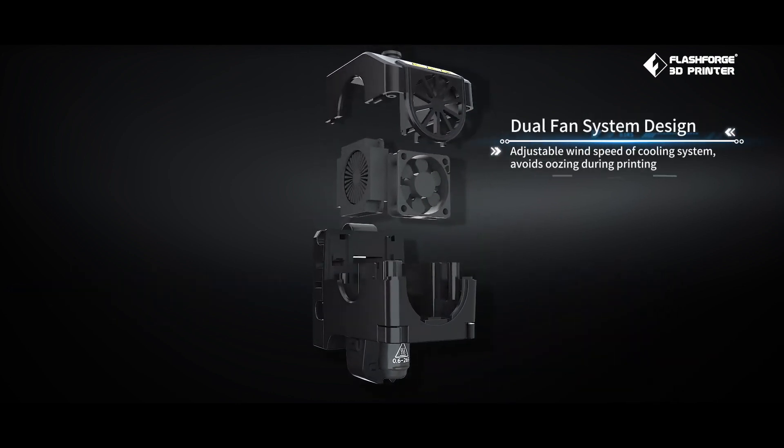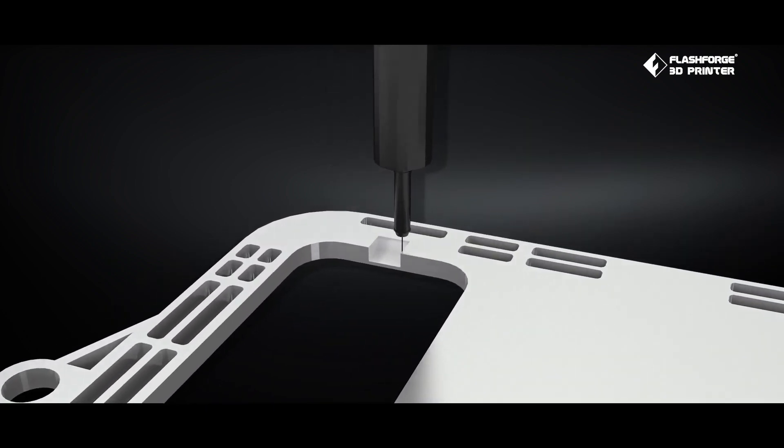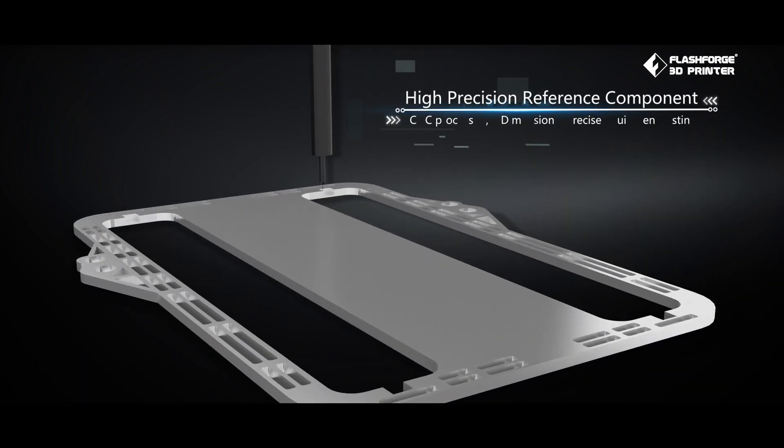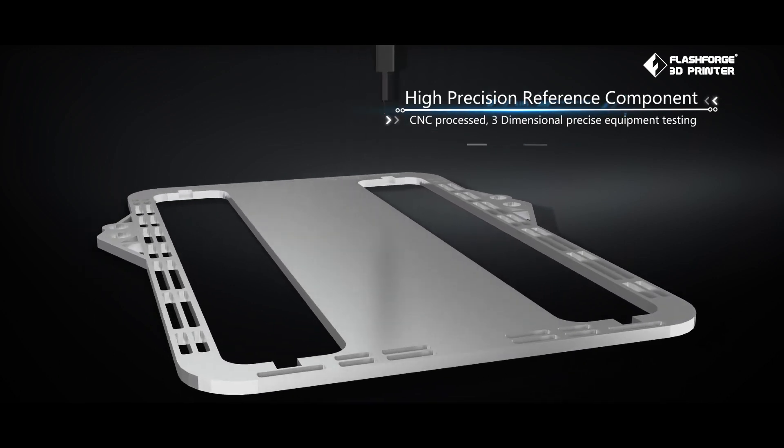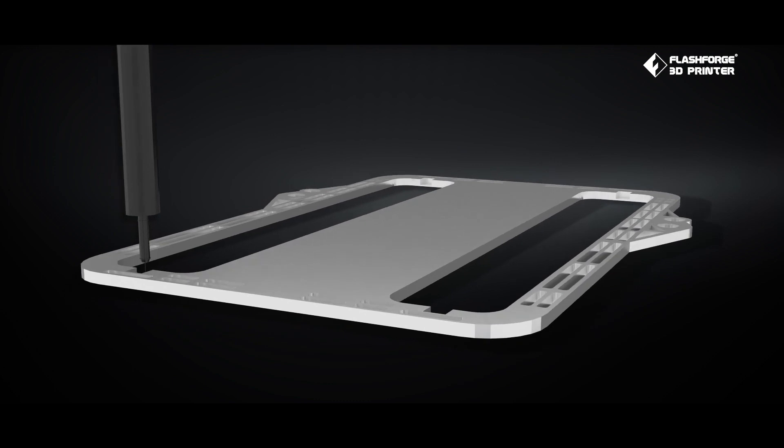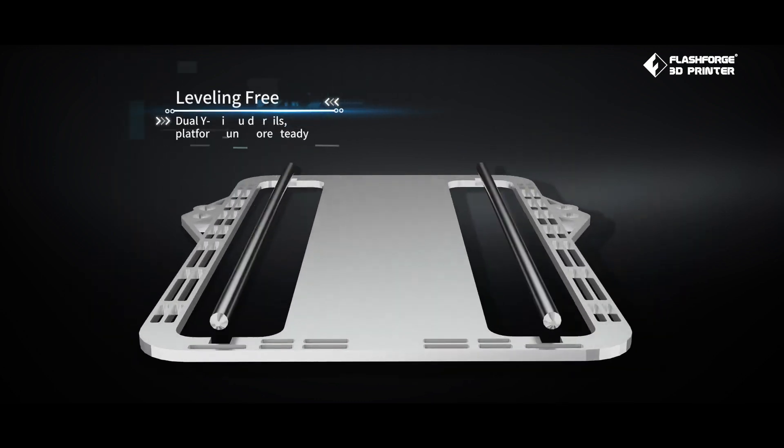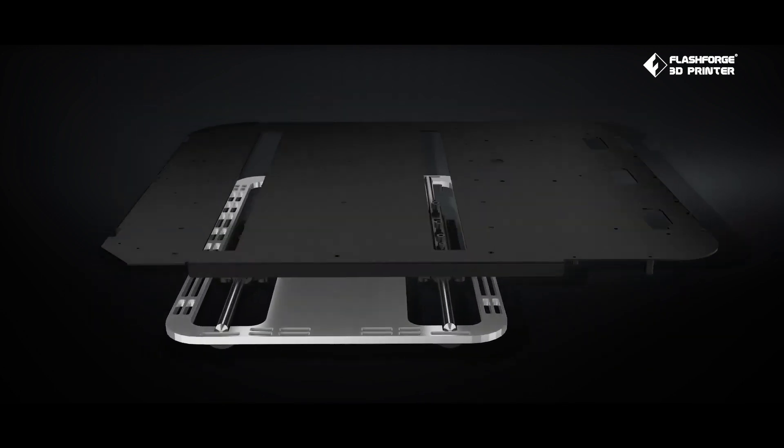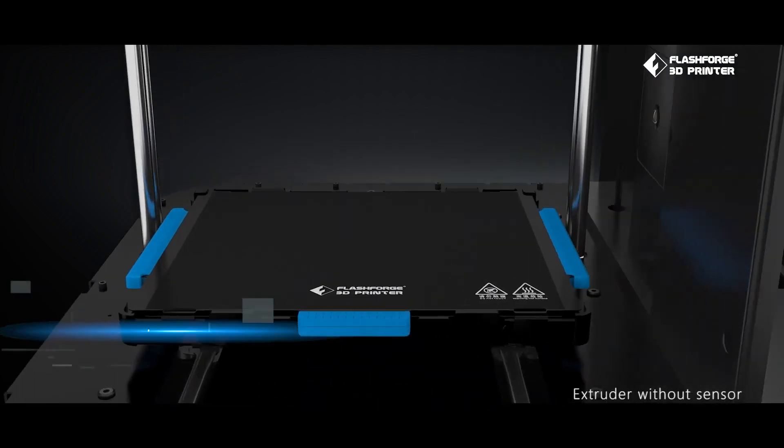The FlashForge Adventurer 4 is controlled through a simple touch screen on the left side at the front of its case. This is easy enough to use when setting up prints, but we found entering our Wi-Fi password to be a bit difficult. After a few failed attempts, we used a wired Ethernet connection to pair it with our computer, and this worked flawlessly.